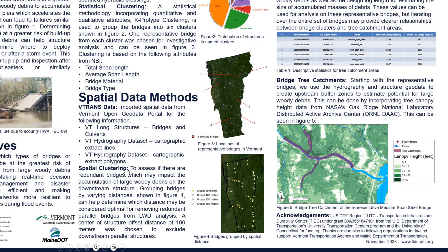The next step was spatial clustering of bridges. When two bridges are very near to each other, the bridge downstream will not have significant debris accumulation, because all debris transported by floodwater is already trapped by the upstream structure. We grouped all bridges into different groups based on relative distances — 50 meters, 100 meters, 250 meters, and 500 meters — and chose 100 meters as the cutoff value. If two bridges are less than 100 meters apart, the downstream bridge does not suffer from debris accumulation.